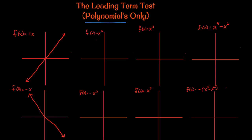x² is a parabola that opens up, centered at the origin — also known as a quadratic. Negative x² is just going to flip or rotate about the x-axis, so it opens down.